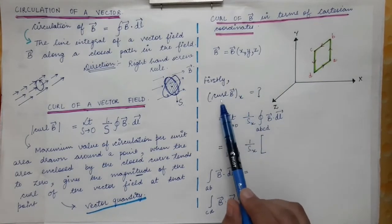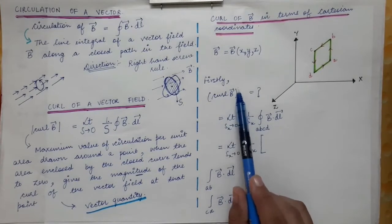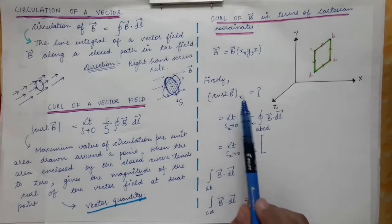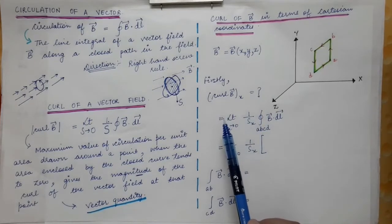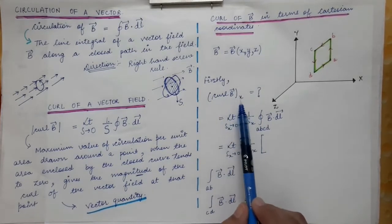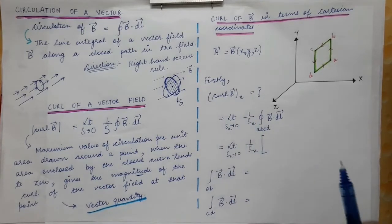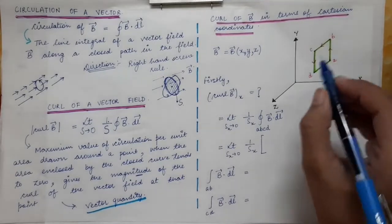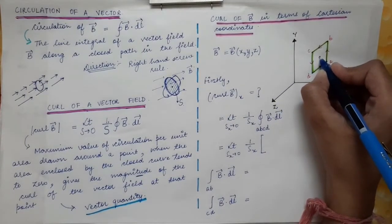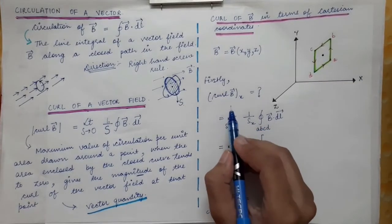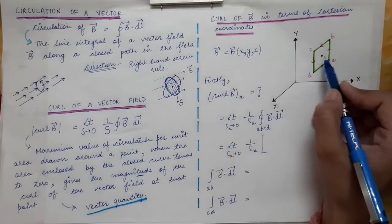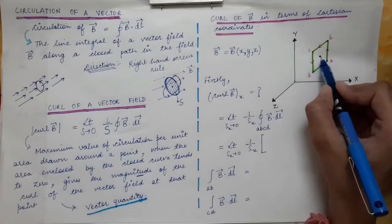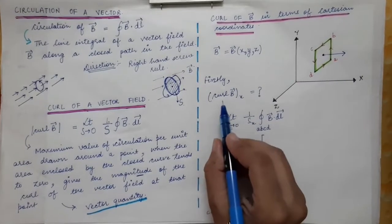First we are going to find the X component of the curl of vector B. The curl of vector B is a vector quantity with X, Y, and Z components. The X component of curl of B points along the X direction. So we define the curl of vector B at a specific point in space, and the X component points along the plus X direction.